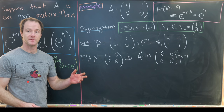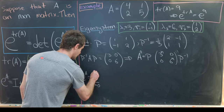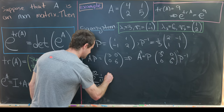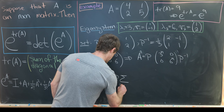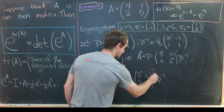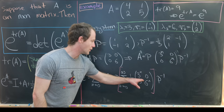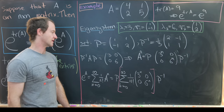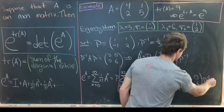Now we're ready to calculate the matrix exponential. We have e to the A equals the sum from n=0 to infinity of (1/n!) A^n. Substituting our formula for A^n, we can factor P and P inverse outside the sum, giving P · [sum of (1/n!) 3^n, 0; 0, sum of (1/n!) 6^n] · P inverse. Those sums are just the scalar exponential, so e to the A = P · [e³, 0; 0, e⁶] · P inverse.